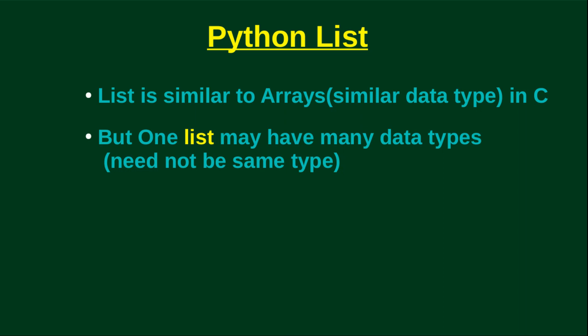In Python, we can have an integer, a string, a double, and another Python list all together in the same list. That is, Python lists can hold mixed data types.